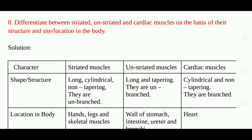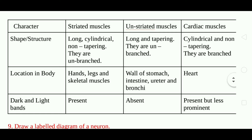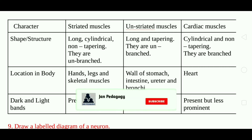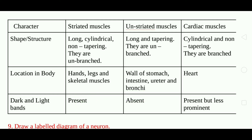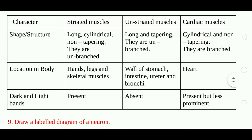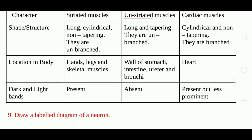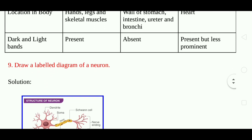Question 8: Differentiate between striated, unstriated, and cardiac muscle on the basis of their structure and site or location in the body. Answer: Shape/structure — striated muscle: long, cylindrical, non-tapering, unbranched; unstriated muscle: long and tapering, unbranched; cardiac muscle: cylindrical and non-tapering, branched. Location — striated: hands, legs and skeletal muscles; unstriated: walls of stomach, intestine, ureter and bronchi; cardiac: heart. Dark and light bands — striated: present; unstriated: absent; cardiac: present but less prominent.